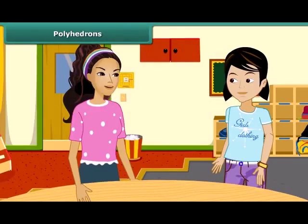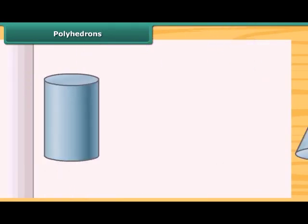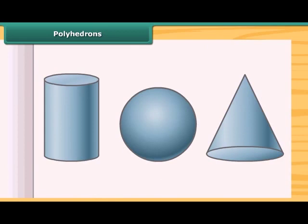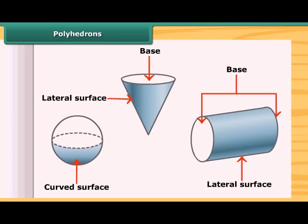Do you know what we call a solid having flat faces, edges and vertices? No. Those solids are called polyhedrons. These all solids are polyhedrons. Are these objects polyhedrons? No, these are not polyhedrons. You are right. These are not polyhedrons because they do not have flat faces.